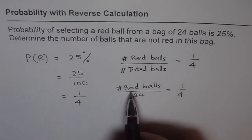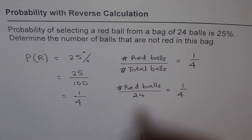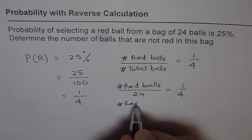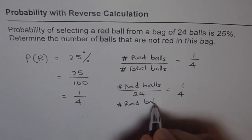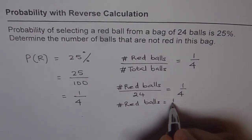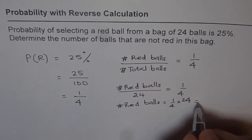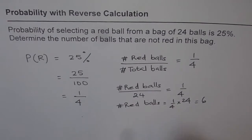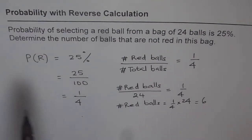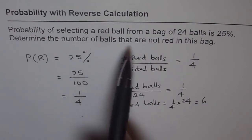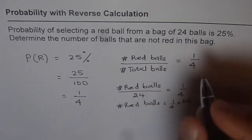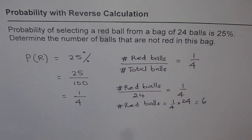From that equation we can find how many red balls there are. Number of red balls equals 24 over 4, which is 6. So the total number of red balls is 6. But the question asks for the number of balls that are not red, so now let us find not red.